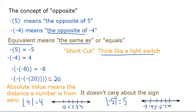So those are some terms to remember: the word opposite, represented by that little dash in front; equivalent, meaning same as, another word for the equal symbol; and absolute value, which is the distance a number is from zero. Those are important notes to keep in mind as you move forward.